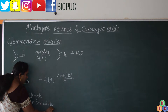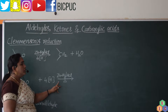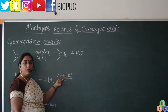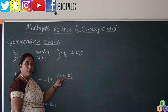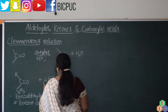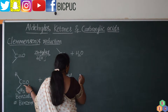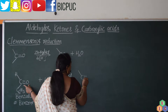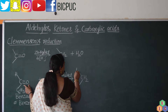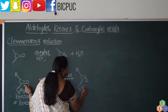Benzene carbaldehyde upon Clemmensen's reduction — that is, by using zinc amalgam and HCl, which releases nascent hydrogen — will reduce the carbonyl group to become the CH2 group. So, what product are we going to get?